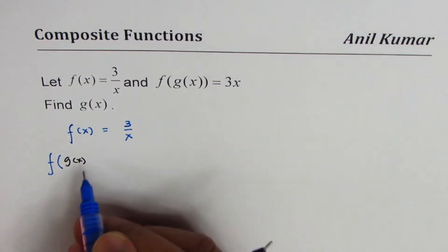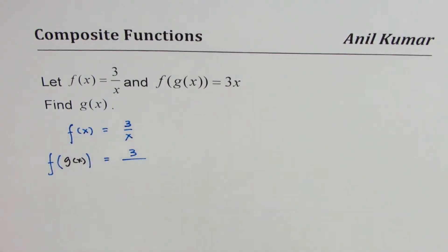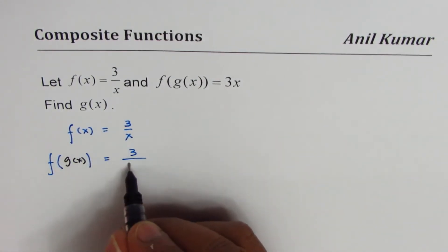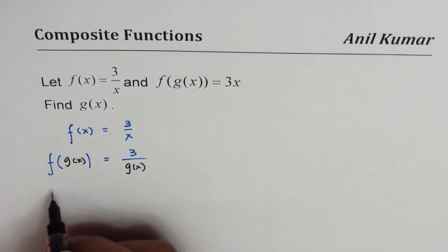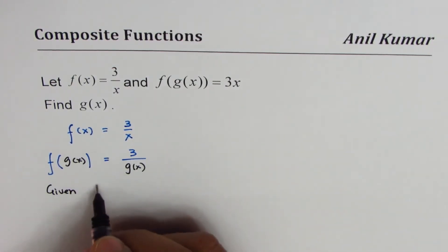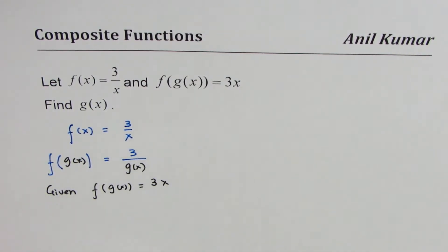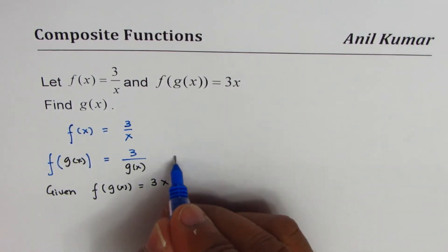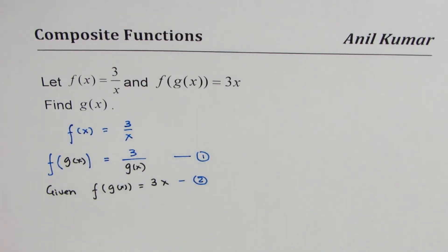f(g(x)) should equal 3 over g(x) - we need to replace x with g(x). But we are given that f(g(x)) = 3x, so that means these two should be the same, they should be equal.